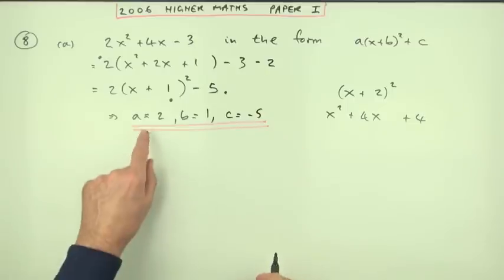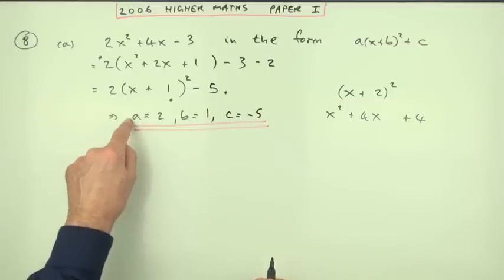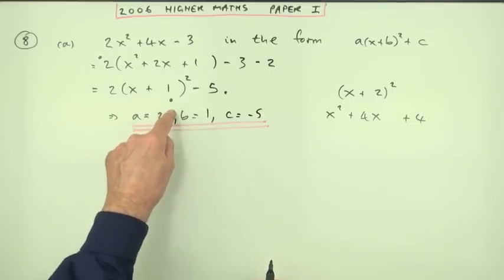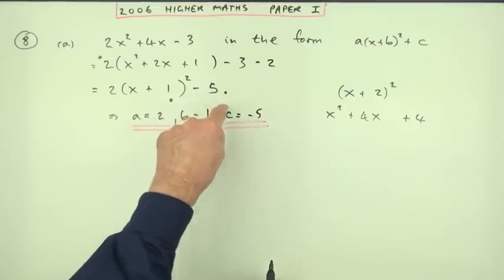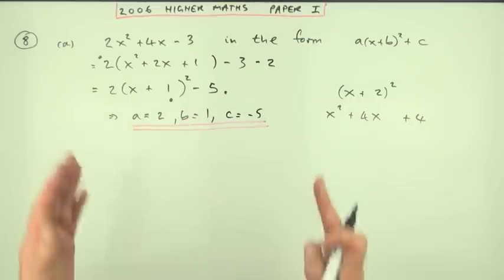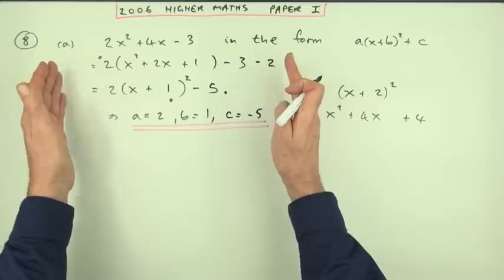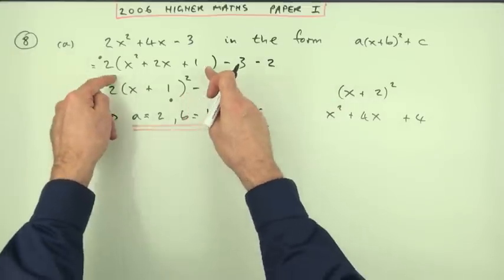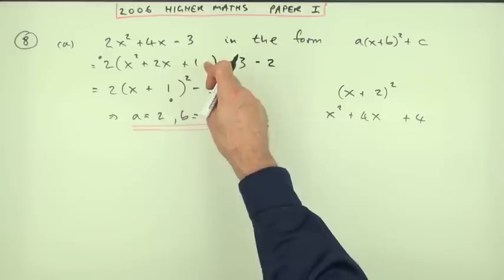Certainly in the marking scheme it says: one mark for a equals two, one mark for b equals one, and one mark for c equals negative five. Now that's the standard completing the square — making this square work by finding what this number should be.